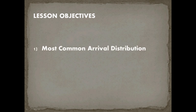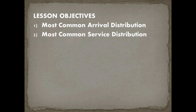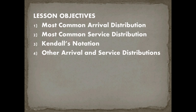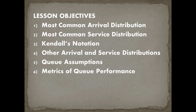In this lesson we've got six objectives. The first is to cover the most common arrival distribution for our analytic model. The second is to look at the most common service distribution. Then we're going to go over Kendall's notation, the common way to describe a queuing model. We'll also talk about other arrival and service distributions, queue assumptions, and the metrics of queue performance — including the math driving the models and how to interpret those numbers.